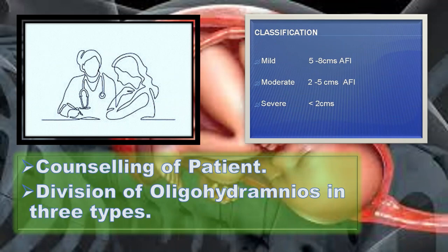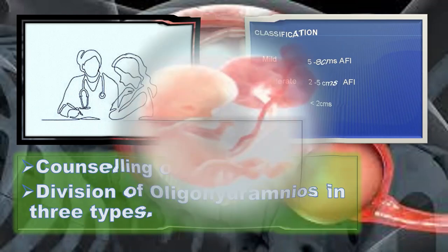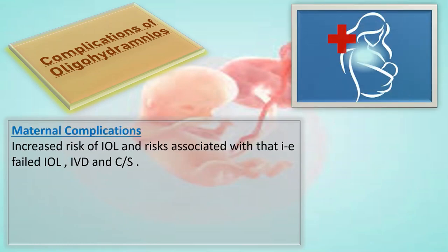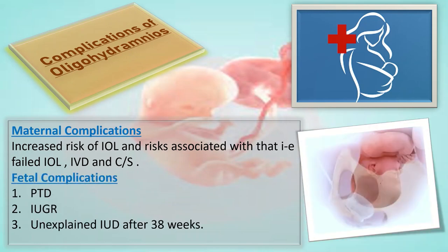Mild oligohydramnios is defined as AFI 5 to 8 cm. Moderate oligohydramnios is AFI 2 to 5 cm. Severe oligohydramnios is AFI less than 2 cm. Possible maternal complications include increased risk of induction of labor, failed IOL, instrumental vaginal delivery, and cesarean section. Fetal complications include preterm delivery, intrauterine growth retardation, and unexplained intrauterine death after 38 weeks of gestation.